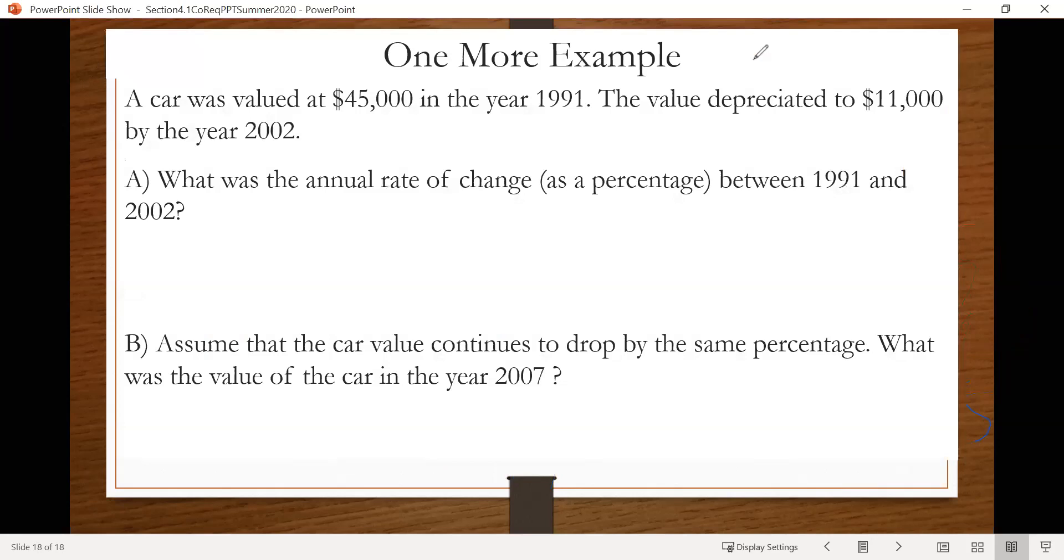So here we're told that a car was valued at $45,000 in the year 1991, and the value depreciated, and if you're not familiar with that word, depreciate means goes down. So it decreases, which hopefully makes sense, because the value of cars decrease over time.